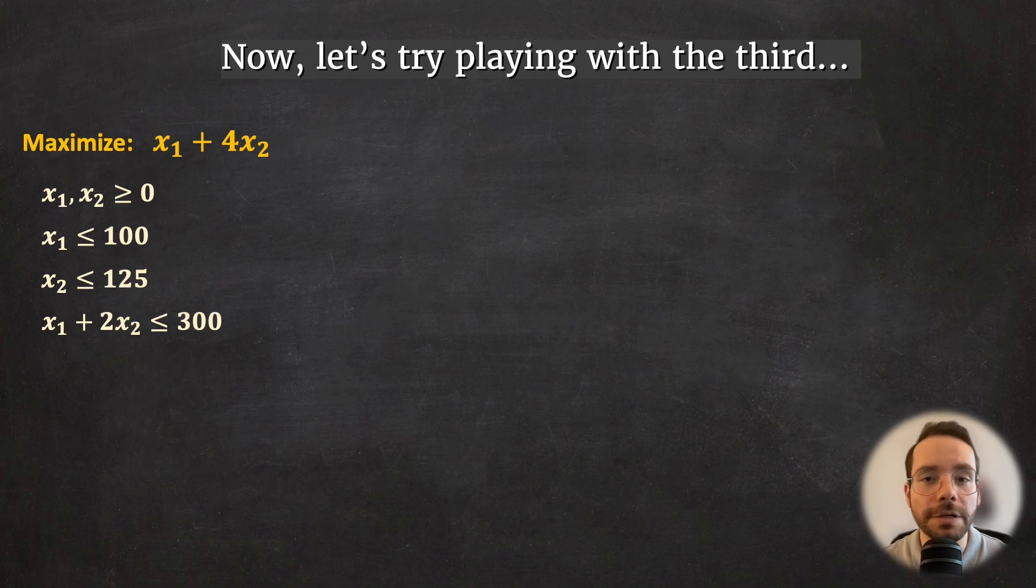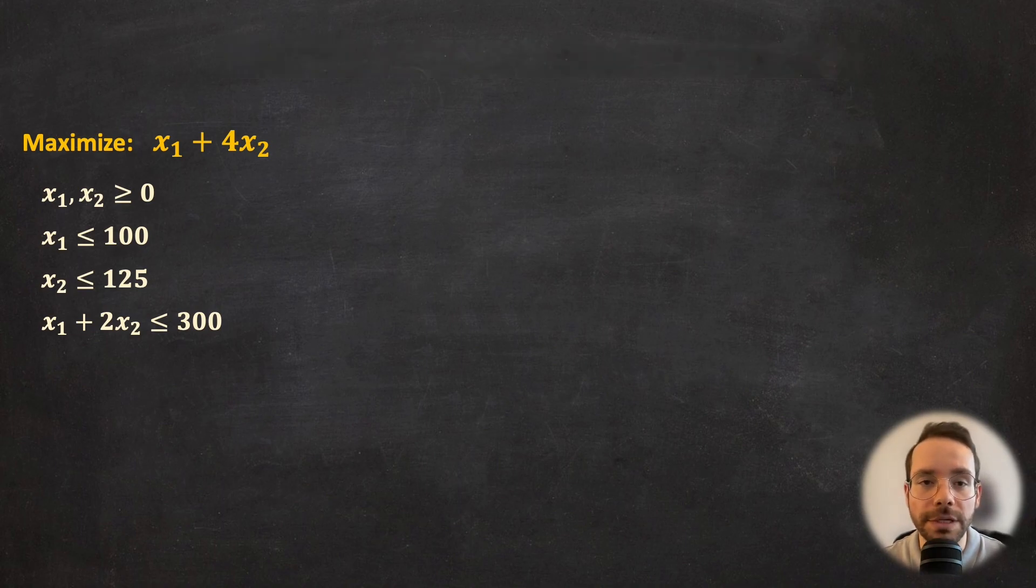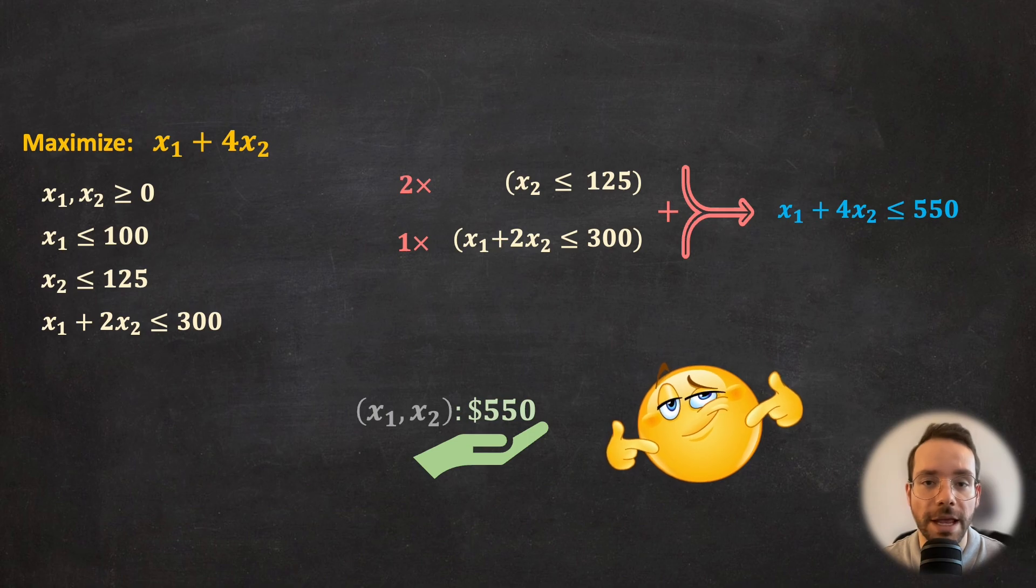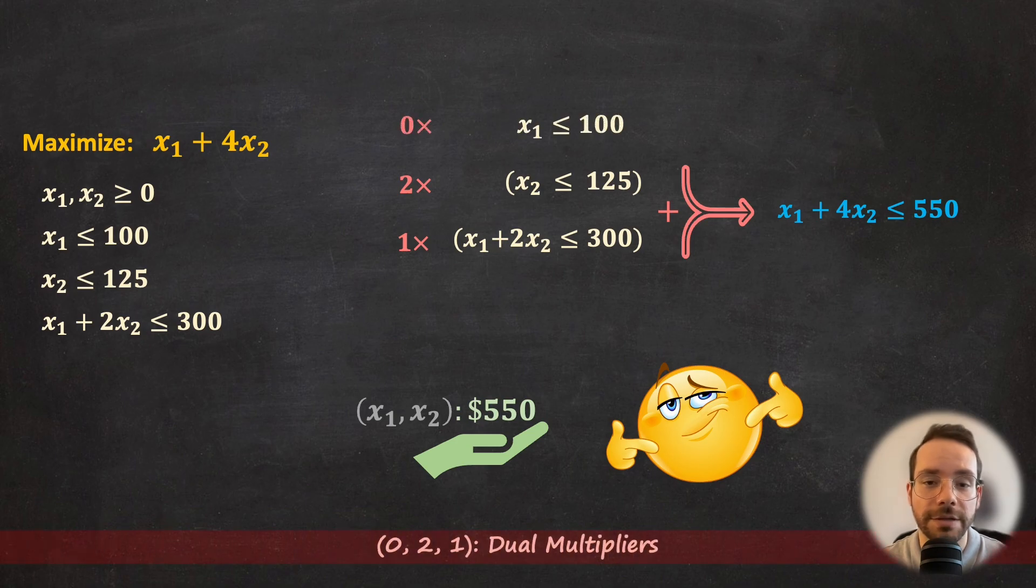The third inequality constraint contains both x1 and x2. So in this particular case, I'm going to take the third one and also x2 less than or equal to 125. After multiplying and summing them up, we have a new inequality that provides a much tighter upper bound on the objective function. This indeed shows that 550 is optimal. And also, the coefficients that we used here, zero for the first one because we didn't use it, and then two and one are called dual multipliers.